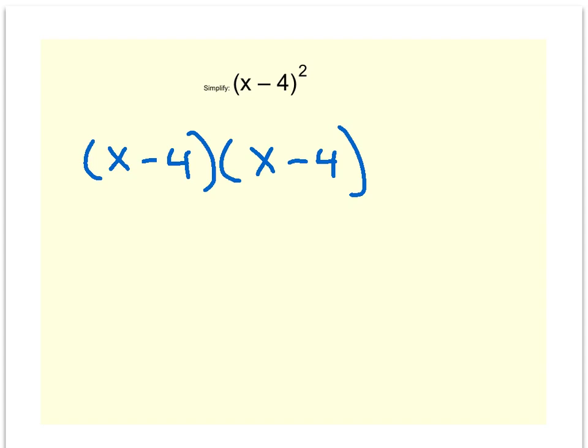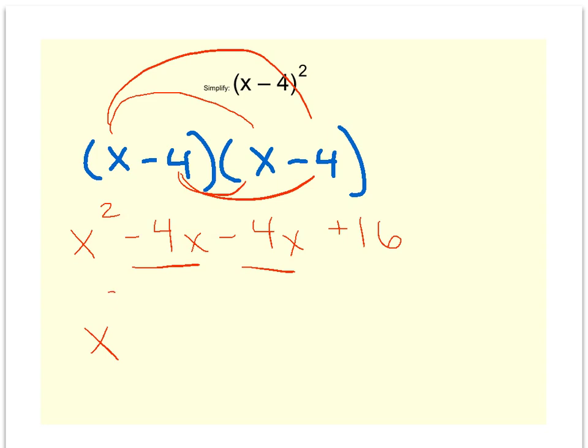So I'll multiply my firsts, x times x is x squared. My outside, negative 4x. My insides, negative 4x. And the lasts, negative 4 times negative 4 is a positive 16.